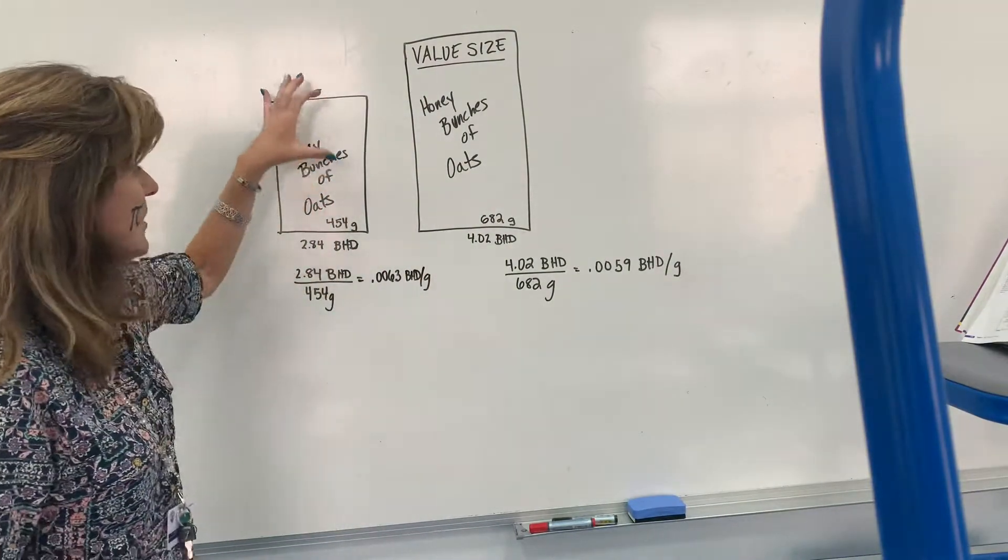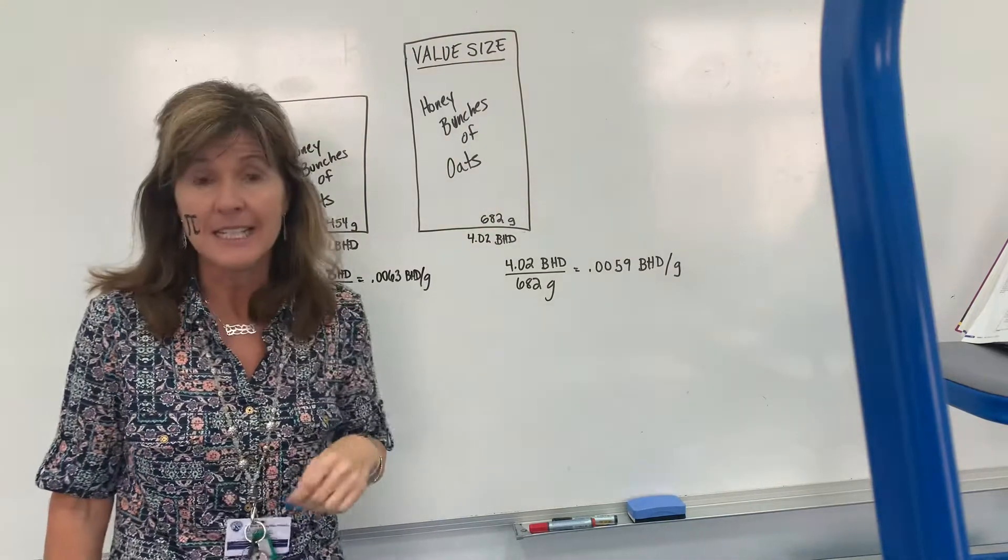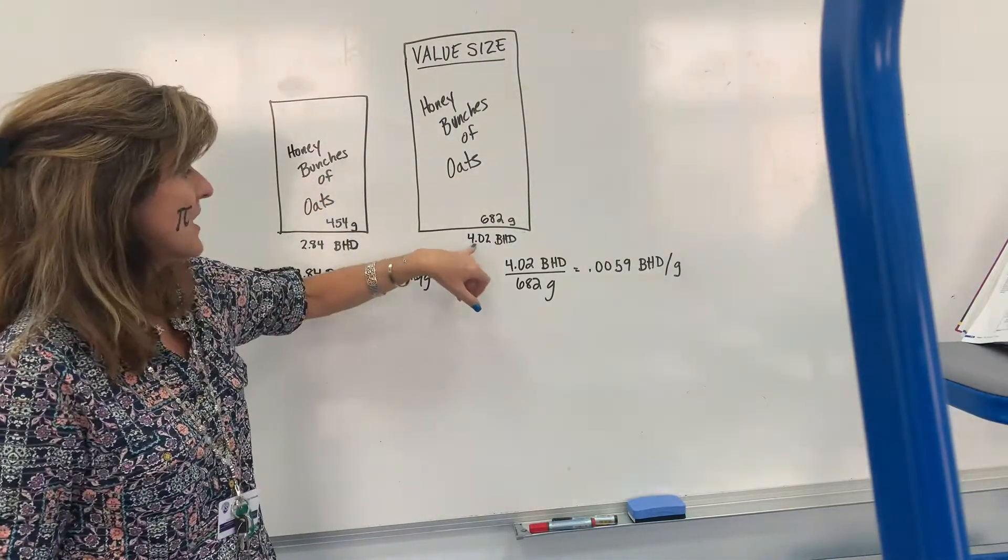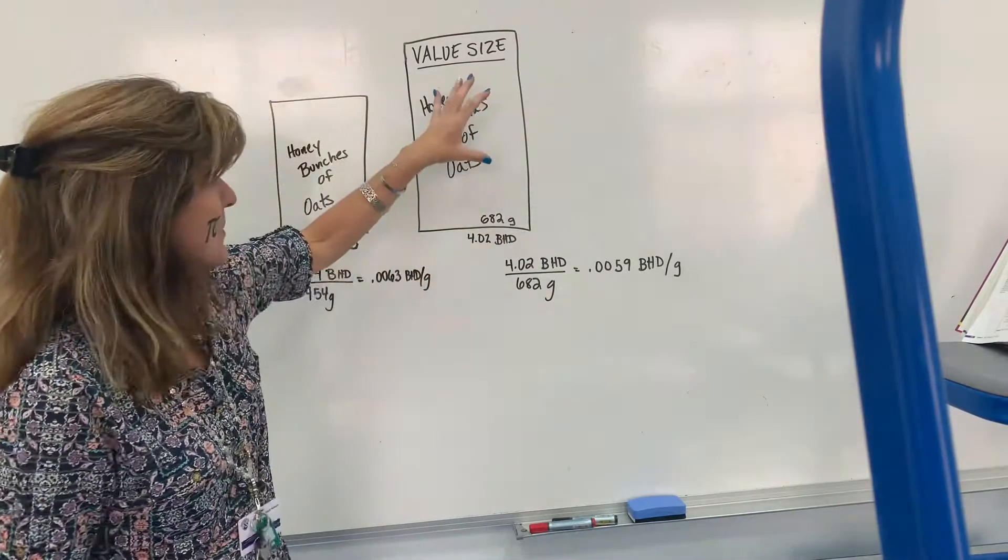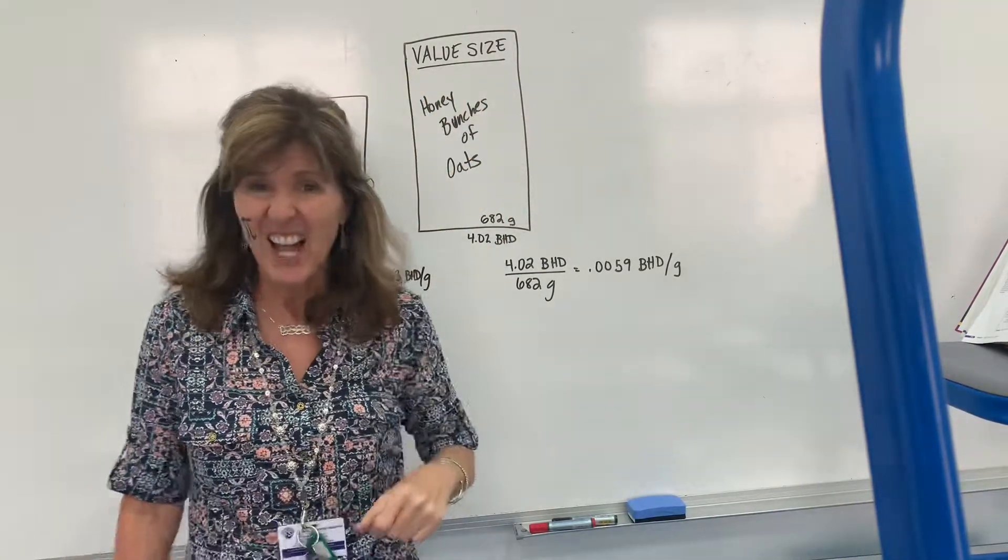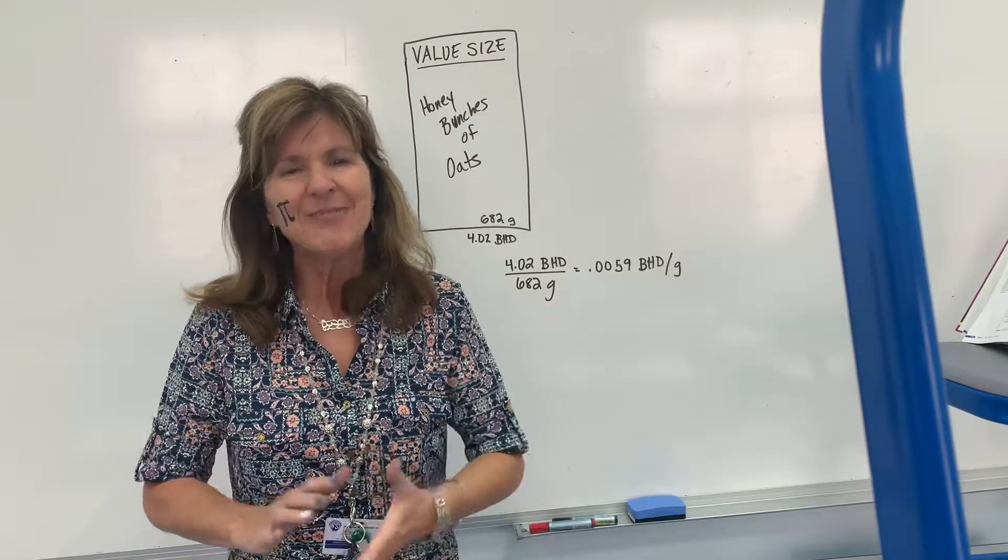So the regular size was 2.84 BDs and the larger size was 4.02 BDs. Now this was a little bit bigger and it said value size on it, so I thought, well surely it's a value size, but maybe not. Maybe it's not a value size. I wanted to make sure.